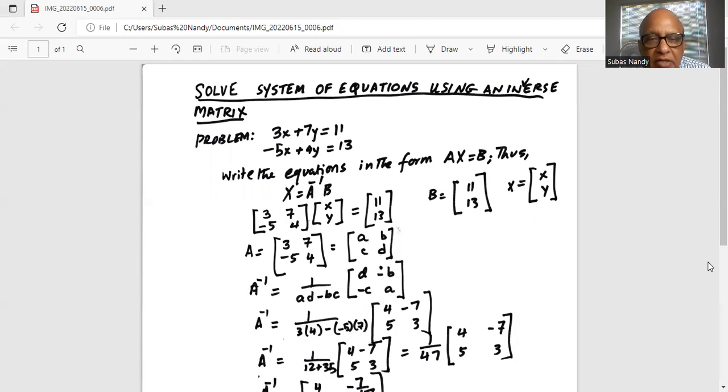We can write the components of matrix A as a, b, c, d. So in our case, a is 3, b is 7, c is minus 5, and d is 4.